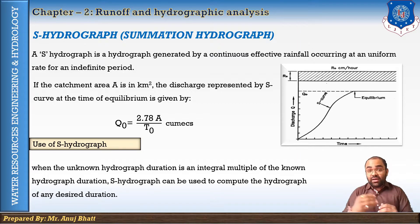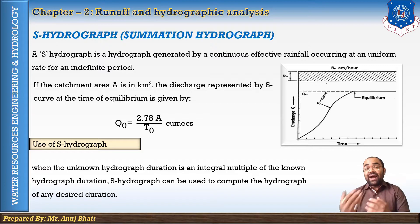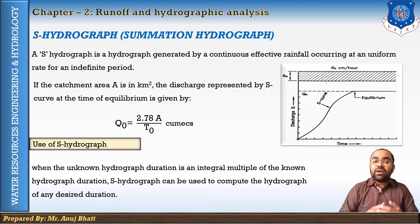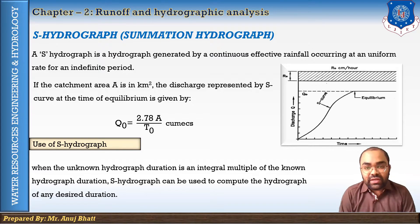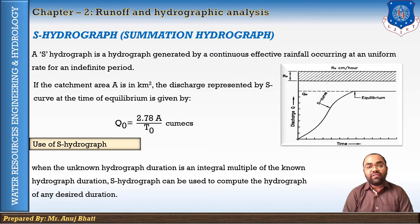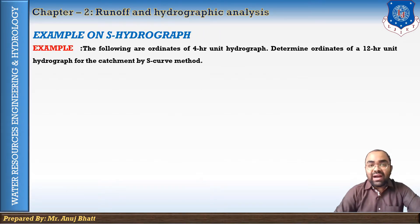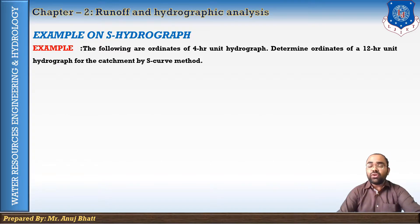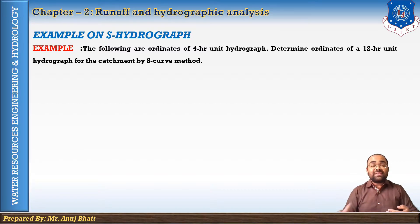In such situations we use the S-hydrograph, which is computed based on the principle of superposition. We first construct the S-hydrograph and then derive the desired shorter-duration unit hydrograph. For example, from a 4-hour unit hydrograph we can obtain the 2-hour unit hydrograph — this is possible only with the S-hydrograph method. Let's discuss one example: the following are the ordinates of a 4-hour unit hydrograph, and we have to determine the ordinates for the 12-hour unit hydrograph.